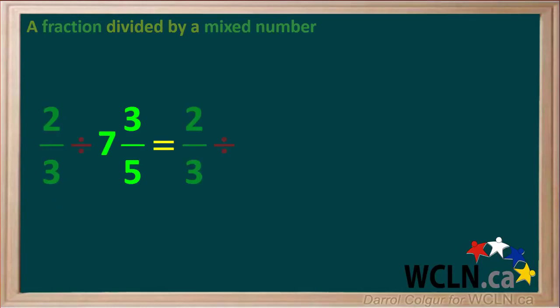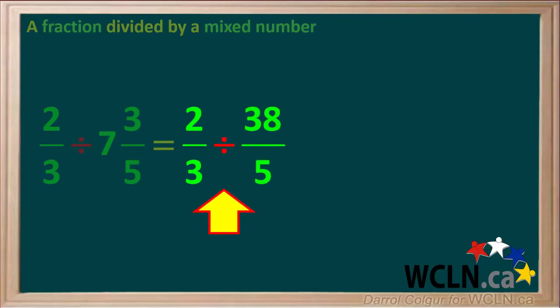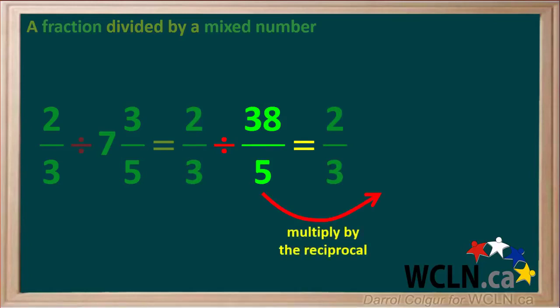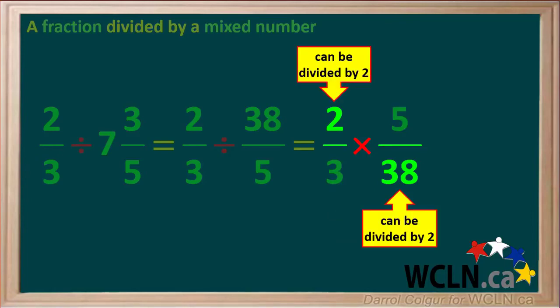We'll start by converting the mixed number 7 and 3 fifths to an improper fraction, which comes out to 38 over 5. So the question now is 2 thirds divided by 38 over 5. To divide by the fraction 38 over 5, we multiply by its reciprocal, which is 5 over 38. So the question now is 2 thirds times 5 over 38. Notice the diagonals 2 and 38 can both be divided by 2, giving us 1 and 19.